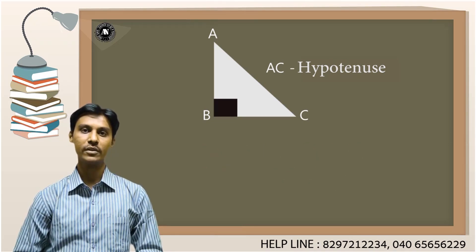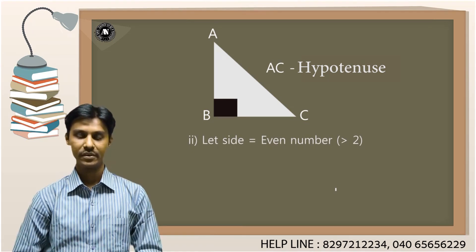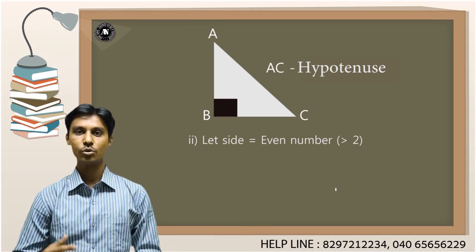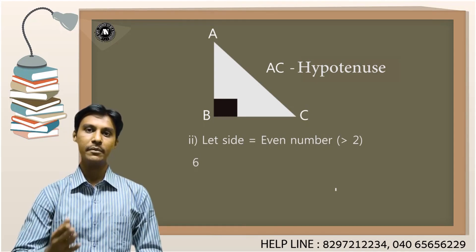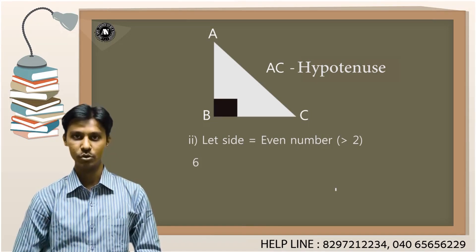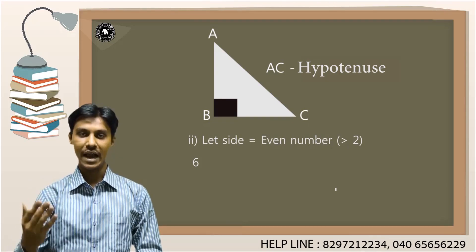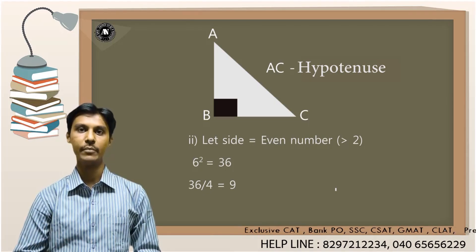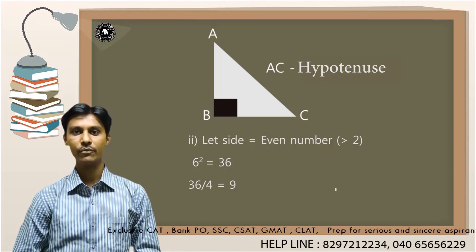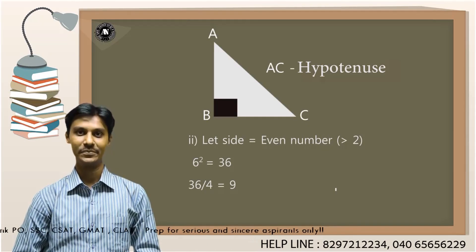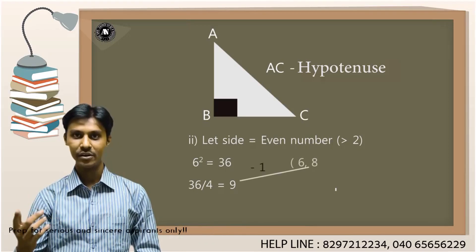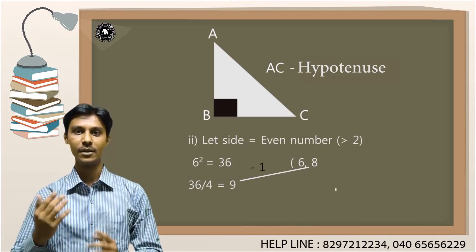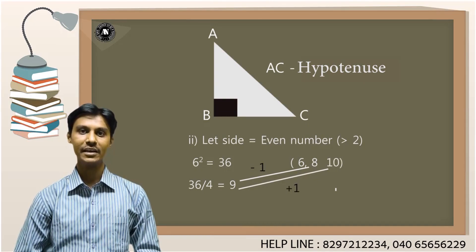Now let me explain what happens if the first number in the triplet is an even number. Let me take an even number not equal to 2 — I will choose 6. I will square 6 and divide by 4 in this case. In the case of an odd number, I divided by 2; in the case of an even number, I divide by 4. So 6 squared divided by 4 is 36 divided by 4, which equals 9. I will subtract 1 from 9 to get my second number, which is 8. I will add 1 to 9 to get the third number, which is 10. So my triplet is 6, 8, 10.